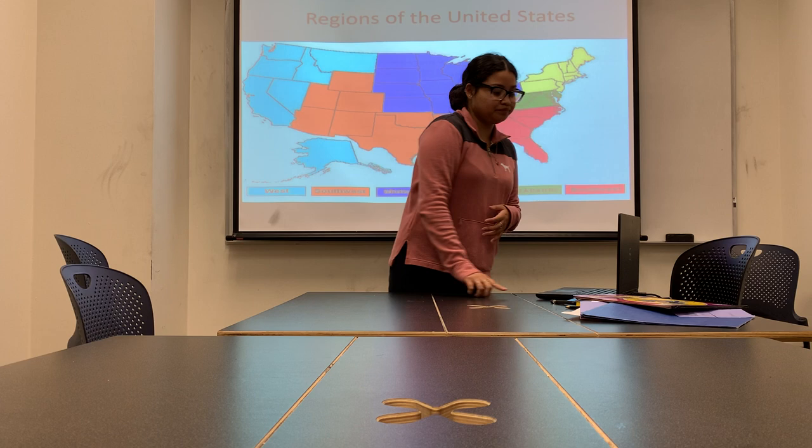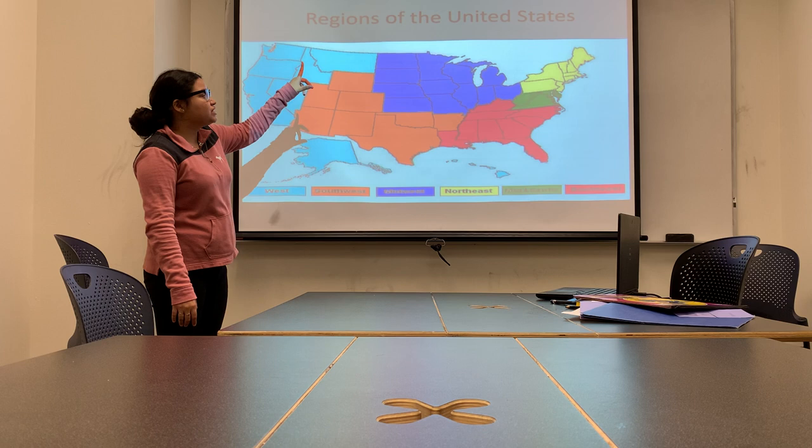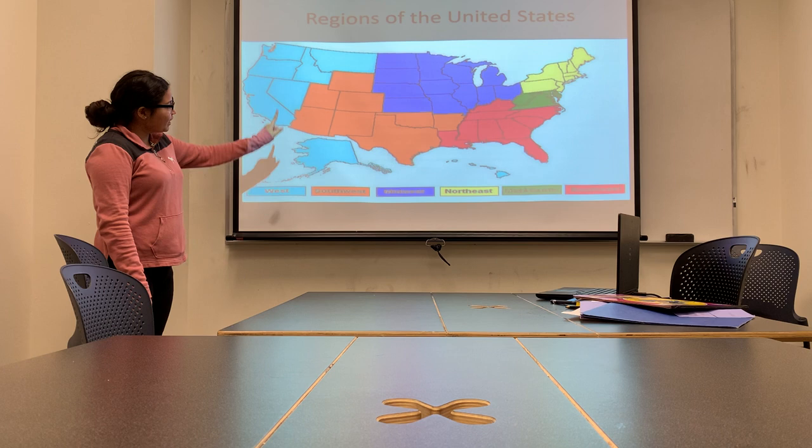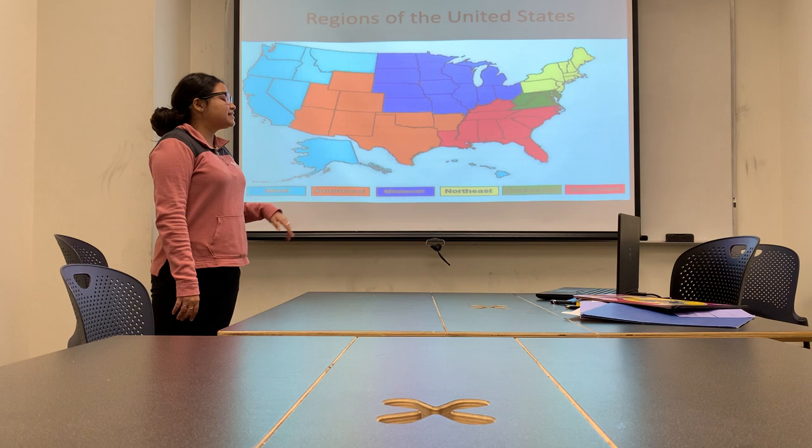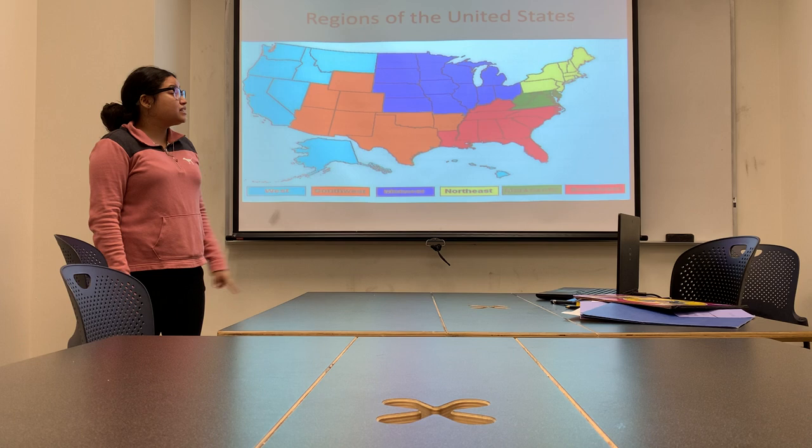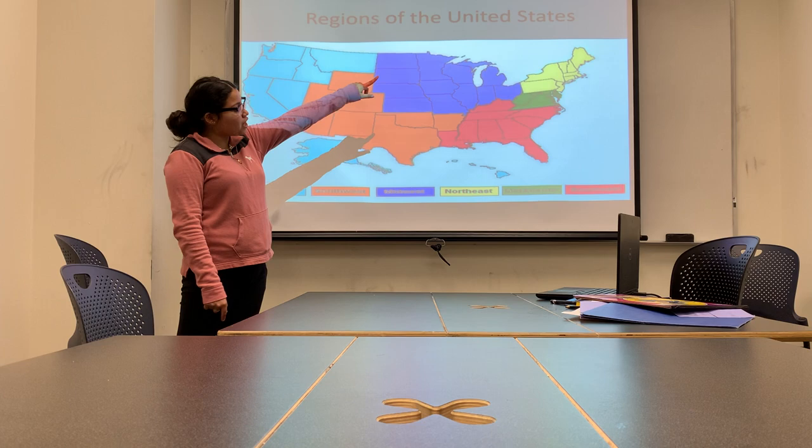Behind me here we see a map, and this map features the regions of the United States. We can see that the sky color here is the West region, this orange color here is the Southwest region, the upper purple color is the Midwest region, this red-pink color is the Southeast region, the green is the Mid-Atlantic region, and up on the top we see the Northeast region.